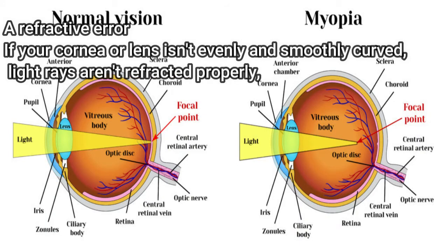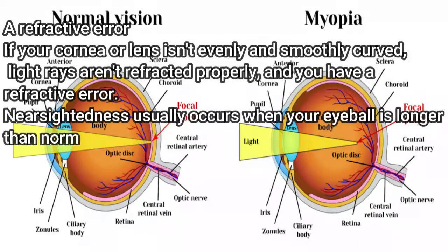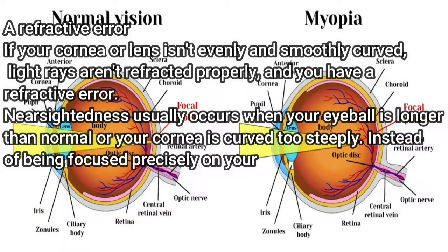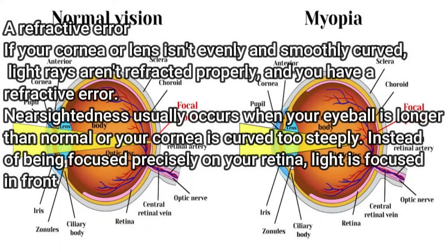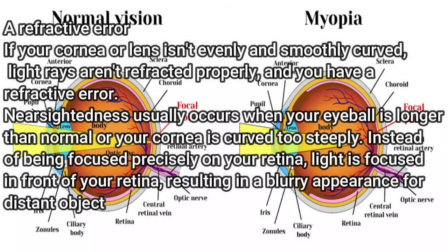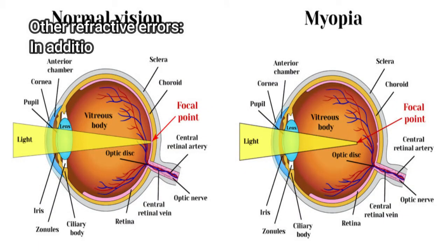A refractive error: if your cornea or lens isn't evenly and smoothly curved, light rays aren't refracted properly, and you have a refractive error. Nearsightedness usually occurs when your eyeball is longer than normal or your cornea is curved too steeply. Instead of being focused precisely on your retina, light is focused in front of your retina, resulting in a blurry appearance for distant objects.